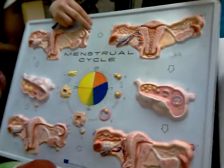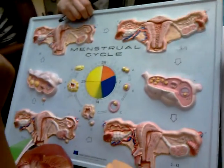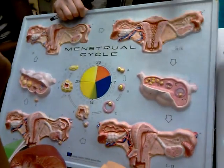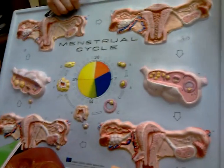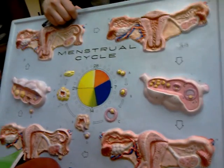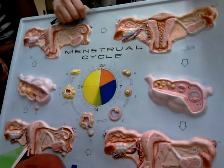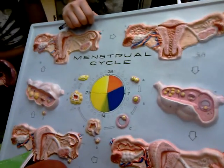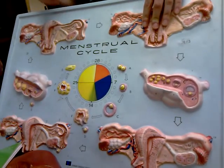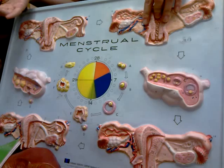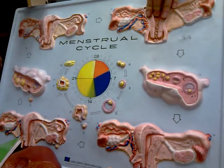There are two divisions to the female cycle: the ovarian cycle and the uterine cycle. The ovarian cycle deals with what happens in the ovaries, and the uterine cycle deals with what happens in the uterus. The ovarian cycle technically causes the uterine cycle because the ovaries are the source of the hormones.